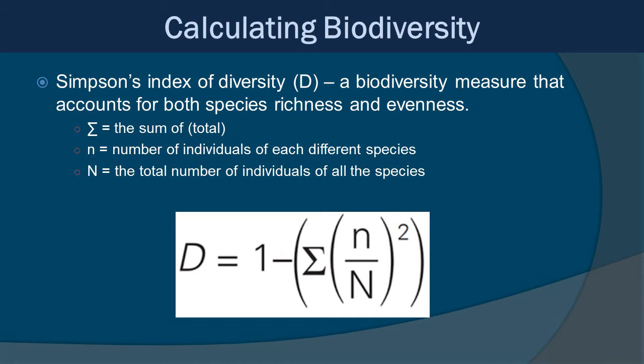In order to sort all this out, we need another equation called the Simpson's Index of Diversity, using D as its symbol. It is a biodiversity measure that accounts for both species richness and evenness, and we'll get practice doing this in another activity. Inside the equation, you have the sigma symbol, which is the sum of the total. Sub n is the number of individuals of each different species, and N prime is the total number of individuals of all species combined. You go through each individual species, find out how many individuals are in each, and plug that into the equation.